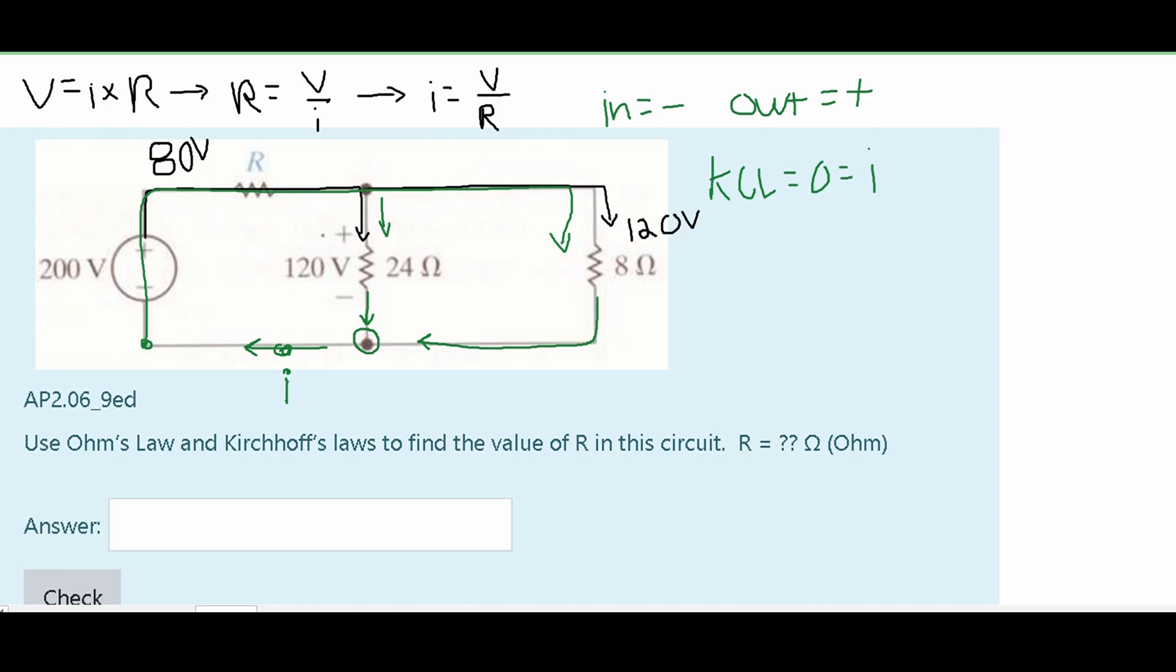Now the current from this middle resistor is going to be negative since it is flowing into our node. To find the current given voltage and resistance, we're going to have the voltage over our resistance, so 120 over 24 in this example. Next we're going to look at this far resistor right here. We know the voltage because again, in parallel the voltage is the same. So this is also going to be a subtraction since it's going into our node. It's going to be the 120 volts divided by our 8 ohm resistor.